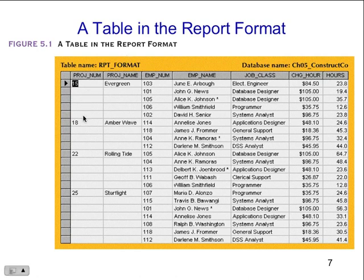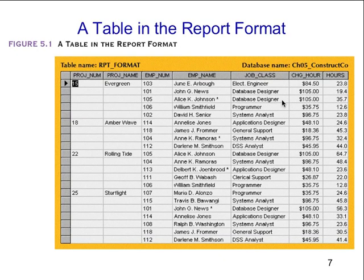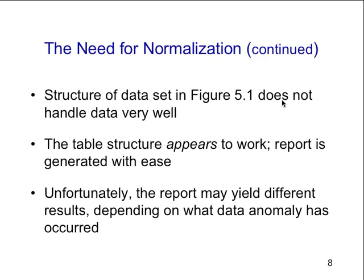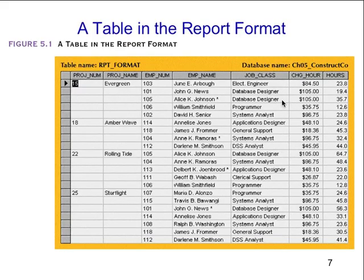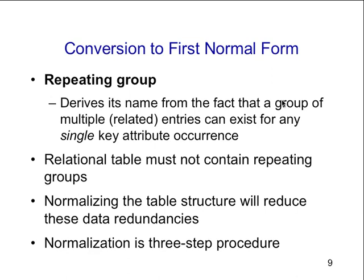We notice some columns and rows that don't have information in them — missing information. We also have a lot of redundancy, like 'database designer' repeated. The structure of the data does not handle data or queries very well. The report may be generated with ease, which is why people do this, but the report may yield different results depending on what data anomalies have occurred and what query is being run. This is a legal Access database table, but we're going to convert it to first normal form.